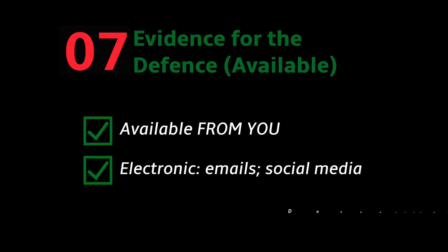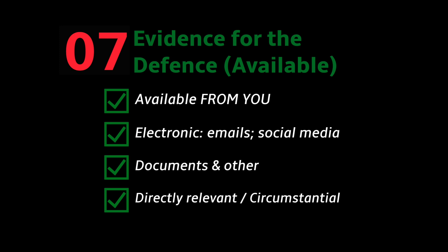Document seven: evidence. This is a list of evidence available from you as the defendant regarding the offence. Do you have emails, pictures, social media screenshots, copies of forms, phone records, or recordings that might be useful? Some might relate directly to the alleged offence; others might be circumstantial but could still be useful. Make a list of everything and keep adding to it over the weeks and months — that's why you need a dictaphone or voice recorder.